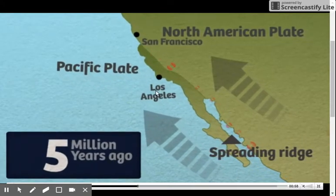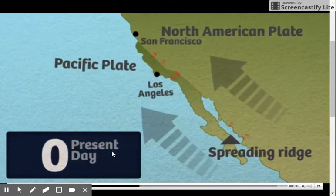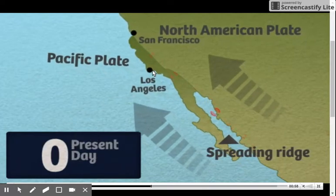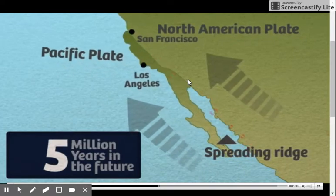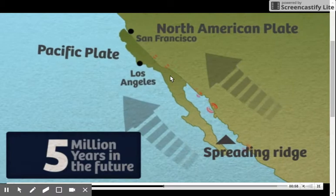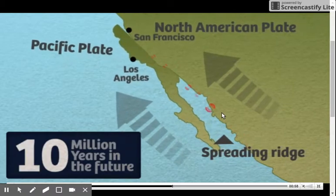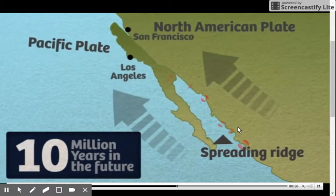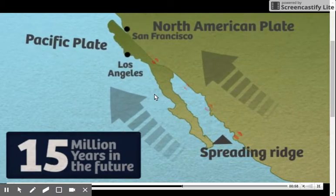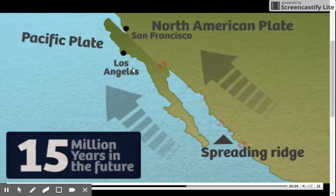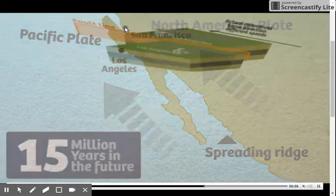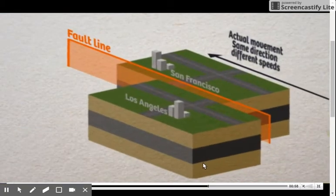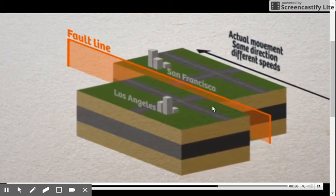This is the past, 5 million years, and present day. Now we're going to go into the future, and we can see that it's continuing to move northward. All of these little earthquakes are occurring from this plate slipping past. You can see Los Angeles and San Francisco in the future will be much closer neighbors.